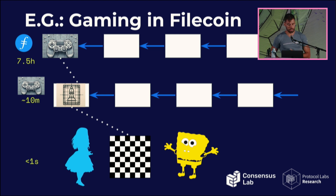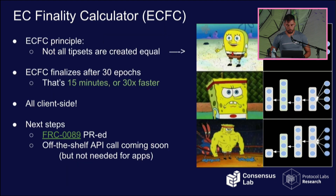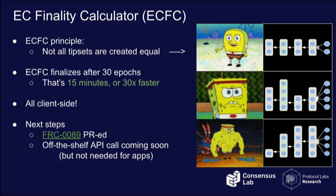Our first take on providing fast finality is the EC finality calculator — EC stands for Expected Consensus, the longest chain consensus of Filecoin. The principle is that not all tip sets are equal: in Filecoin, every epoch in expectation selects five proposers, so a tip set per epoch will have five blocks. If you see multiple epochs with only two blocks, you don't have the same confidence as seeing three consecutive epochs with five blocks. Using this, during normal cases we can provide finality within 15 minutes, reaching the lower bound of longest chain protocols.